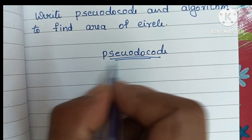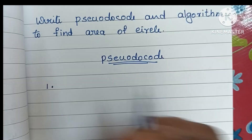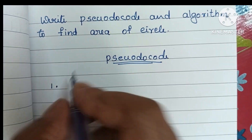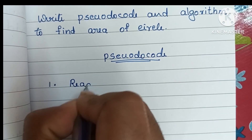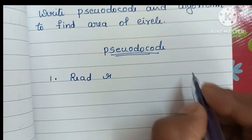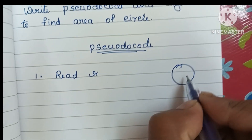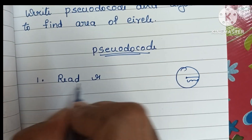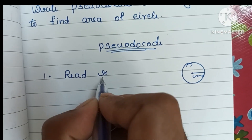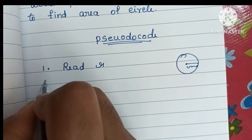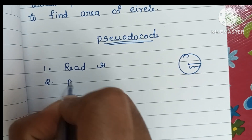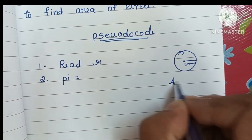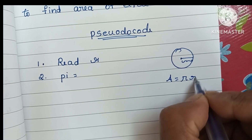To find the area of a circle, step one is to read the radius of the circle, that is r. Here we have to read the radius value r. Next, step two, we have to declare the pi value. The formula to find area of a circle is pi r squared.